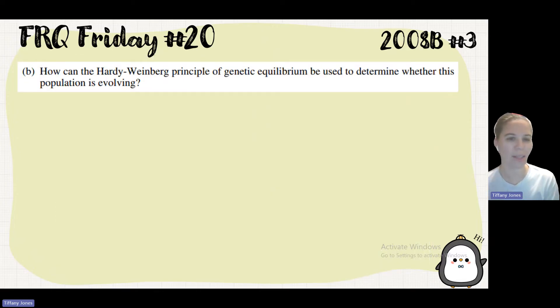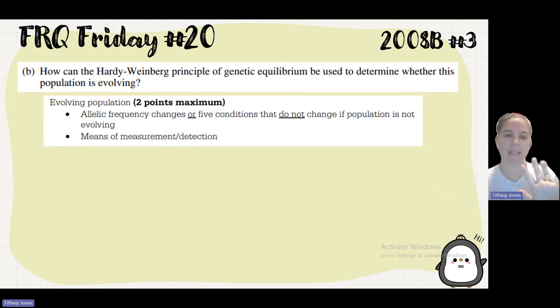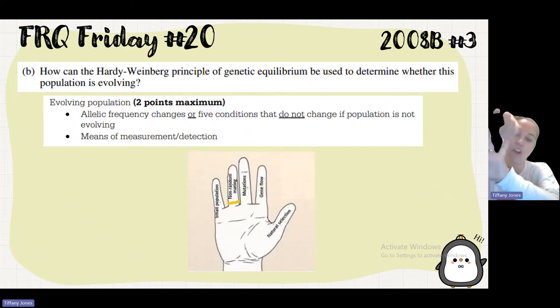So next it says, how can the Hardy-Weinberg principle of genetic equilibrium be used to determine whether this population is evolving? So Hardy-Weinberg states five things. There's these five conditions. And if you haven't looked at Paul Andersen's video of the Five Fingers of Evolution, I would highly recommend going to that. You've got to have a large population size.